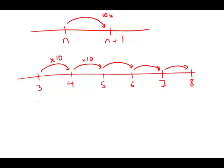The way that you represent that mathematically — multiplying by 10 five times — that's 10 to the power of 5, which would be 100,000. And this is answer choice C.